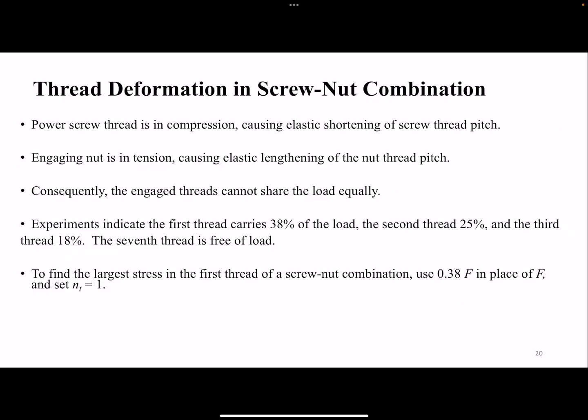A couple of important points is that in power screws, the power screw is in compression, so it's going to have some shortening, but the engaging nut is in tension. So, we have compression and tension of the nut and the power screw. Therefore, the threads are not going to carry the load equally. So, if you have multiple threads, the first thread is going to carry the most load, and then the load is going to decrease as you go on. So, the first thread would be 38%, the second thread 25%, and the third thread 18%, and then goes lower than that to a point that the seventh thread, experimentally, has been shown that it doesn't carry much load.